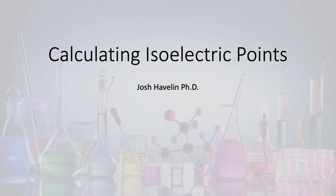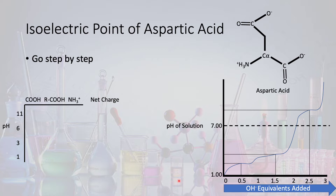The topic of this video is calculating the isoelectric points of amino acids in a broader perspective. This tool can be used to calculate the isoelectric points of peptides and polypeptides. Now that we've discussed some of the driving chemical principles and some of the reasons we care about isoelectric points, let's work through a slightly more complicated example of how to calculate isoelectric point.